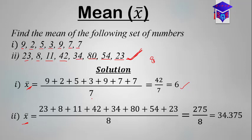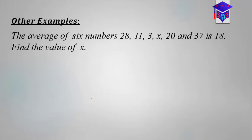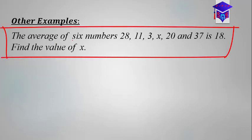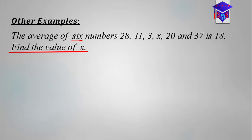Let's take an example like that and see how it works. The question says: the average of six numbers — 28, 11, 3, x, 20, and 37 — is 18. Find the value of x. At first read, if you've not seen this type of question before, you might look confused, but it's very simple. We need to apply the idea of finding the mean to answer this. This time we are given the mean, and one of the values used to calculate it is missing — that is what we need to find.